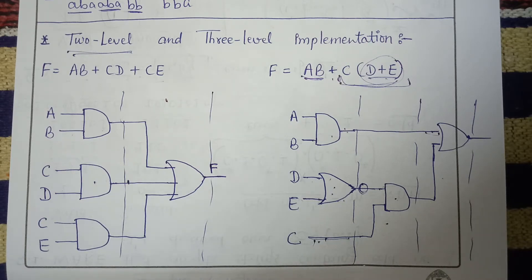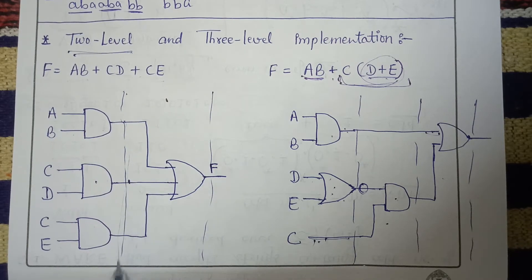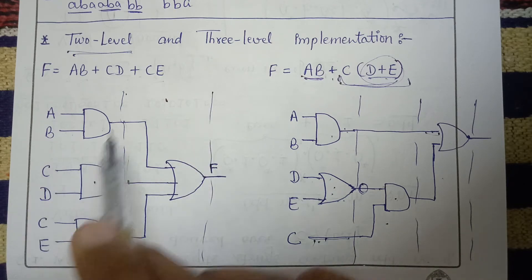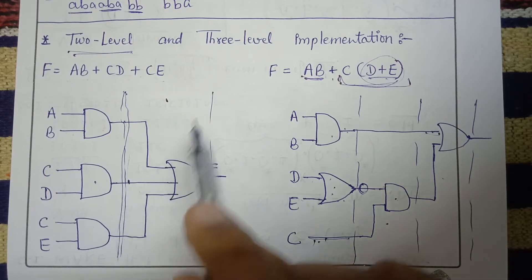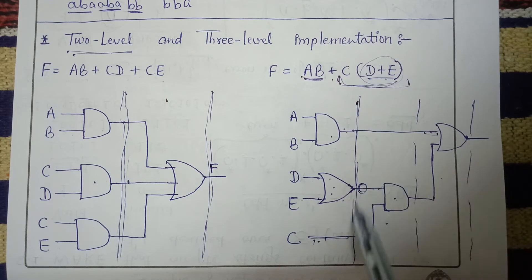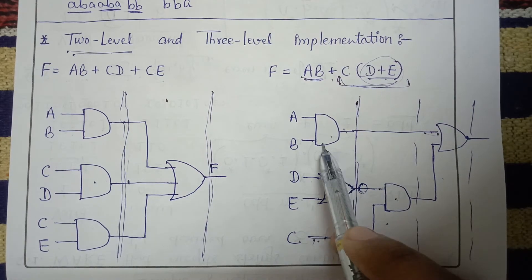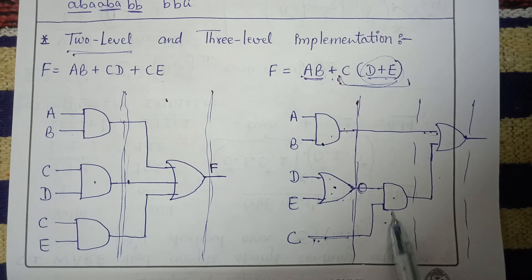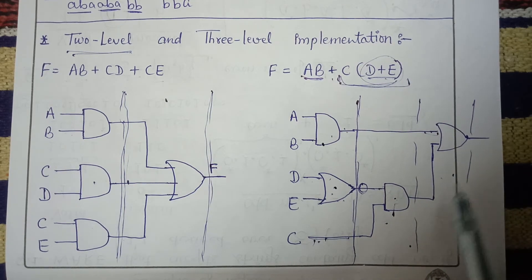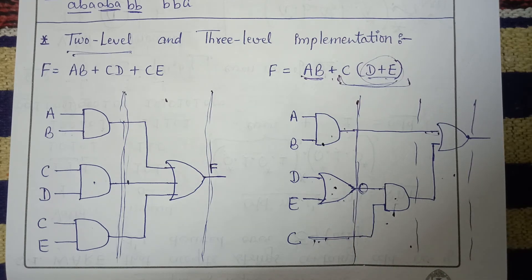Basically, two-level implementation means we are using logic gates in two different levels. In the first example, the first level uses three AND gates and the second level uses one OR gate. In the three-level example, the first level uses one AND gate and one OR gate, the second level uses one AND gate, and the third level uses one OR gate. That is why these are called two-level and three-level implementations. I hope you understand this, thank you.